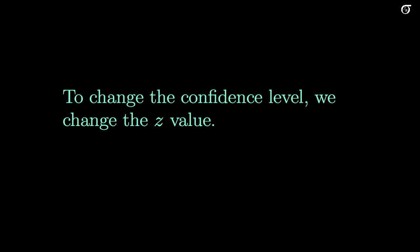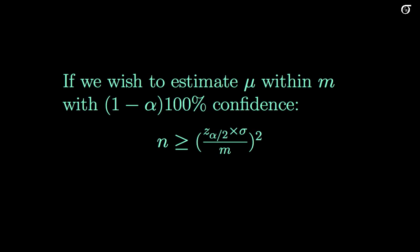In the general setting, if we want to estimate mu within some amount m with 1 minus alpha times 100% confidence, this is our general form: n greater than or equal to (z alpha over 2 times sigma over m) squared. That's the sample size that we need.